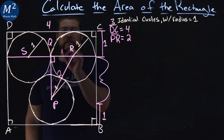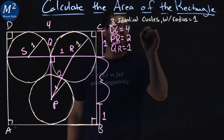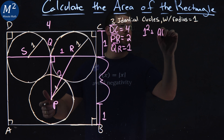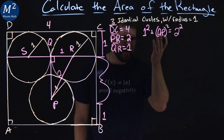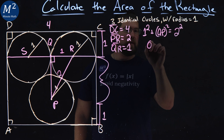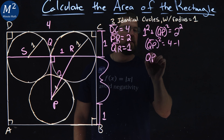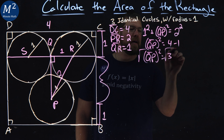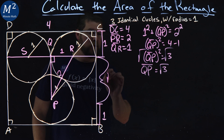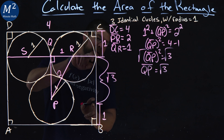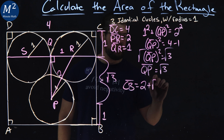Using A squared plus B squared equals C squared, we can find the length of QP. We know QR is 1, it's a radius. So 1 squared plus QP squared equals 2 squared. That gives us QP squared equals 4 minus 1, which is 3. Taking the square root of both sides, QP has a length of square root of 3. This translates to the missing side length: 1 plus square root of 3 plus 1, so CB equals 2 plus square root of 3.